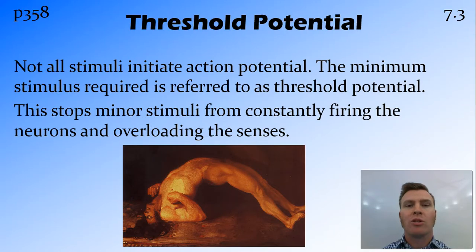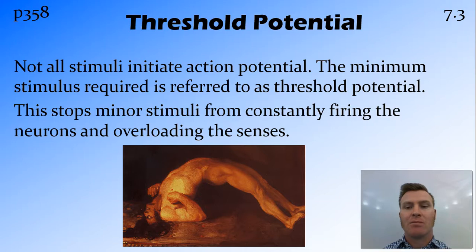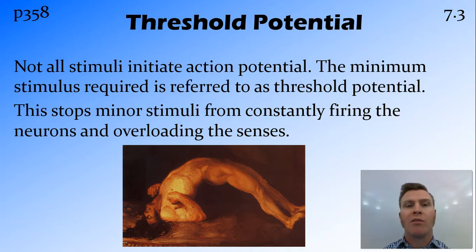The body has what's called the threshold potential. This is the threshold which a stimulus needs to reach before it's going to stimulate that action potential. The importance of this is that if we didn't have threshold potential, the neurons would be firing from all sorts of very small stimuli, and this would overload our senses and cause the neurons and nervous system to burn out.